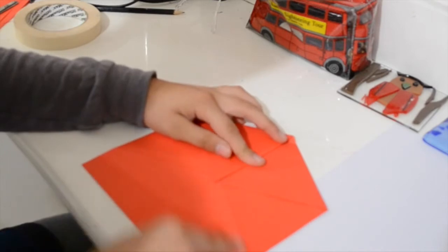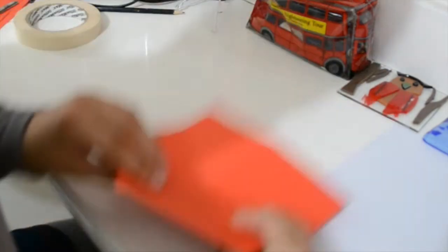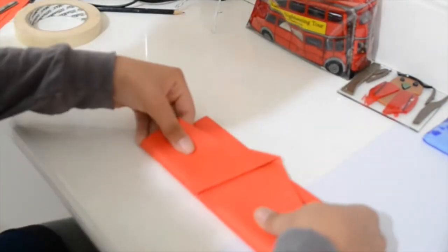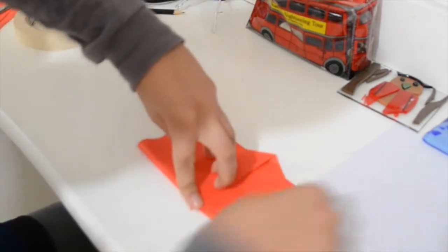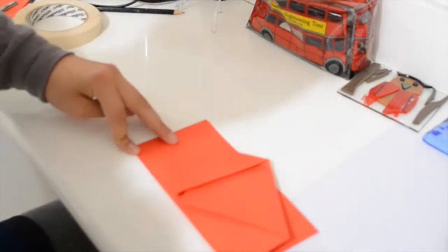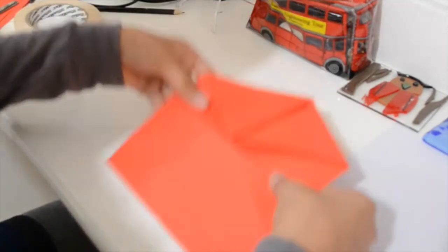So now we have those lines there. Now we're going to fold it in half between those, in the middle of those two lines we just made. Fold it back out again.